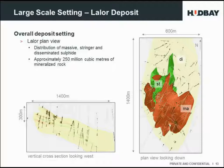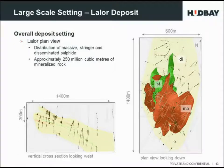This gives us an idea of the overall scale of the geophysical target at Lawler. We have a series of massive sulphide lenses about 300 metres thick, an overall system at least 1,400 metres long in a north-south direction, and about 600 metres wide. For a VMS deposit, this is a huge system — roughly 250 million cubic metres of mineralised rock in one form or another.